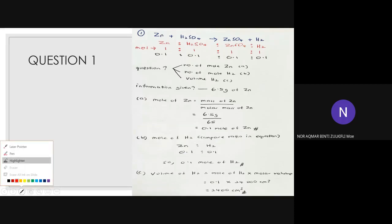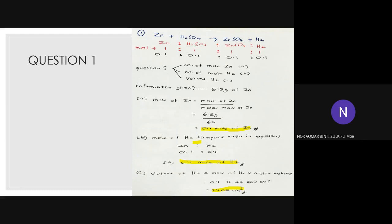Once you have your answer, you will check it with me. I will explain how you got the answer. For part (a) you get 0.1 mol of zinc, for (b) you get 0.1 mol of H₂, and for (c) you get 2,400 cm³. If you already understand, that's fine, but for those who still don't, let me explain.